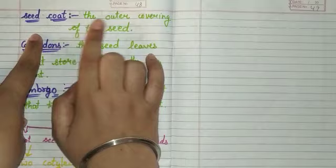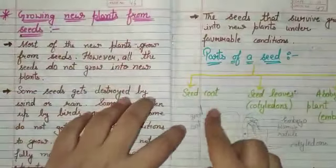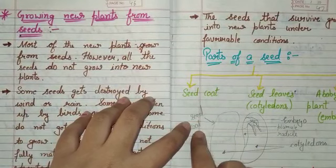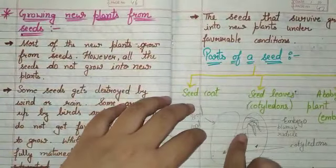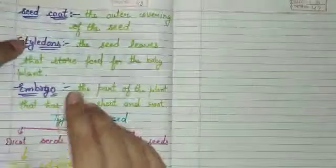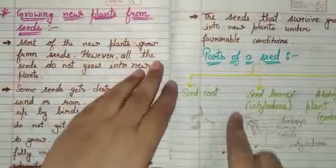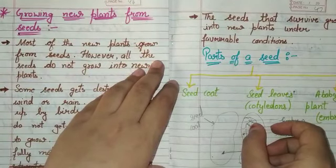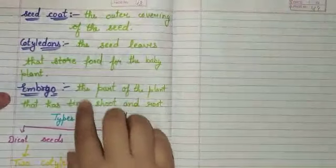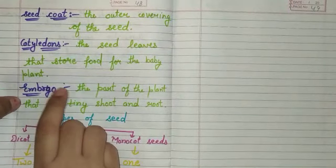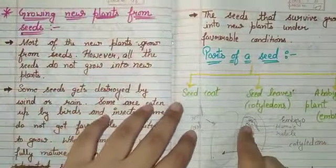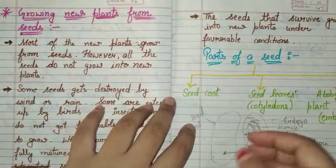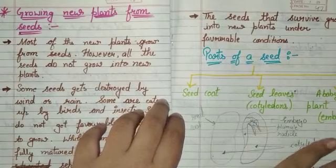The structure of a seed: First, the seed coat — the outer covering of the seed. Second, cotyledons — the seed leaves that store food for the baby plant; this is the middle part of the seed. Third, the embryo — the part of the plant that has a tiny shoot and root, in which new roots and a new plant grow.